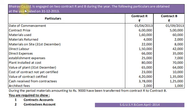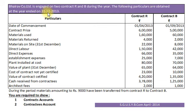Here is the question. Bairdow Company Limited is engaged on two contracts R and B during the year. The following particulars are obtained at the year ended on 31st December 2013. Particulars: Contract R, Contract B.